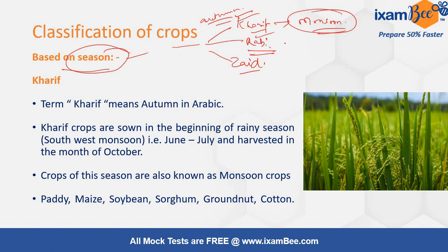Rabi crops are mainly the winter crops — crops which are grown in the winter season. And Zayad crops are the summer crops.